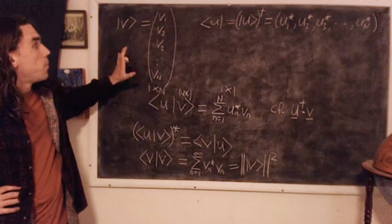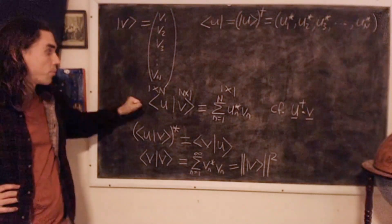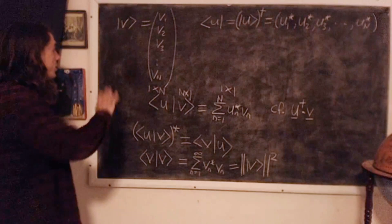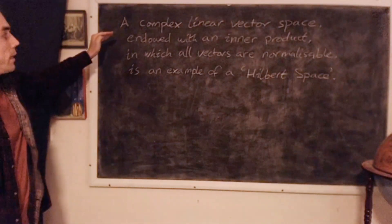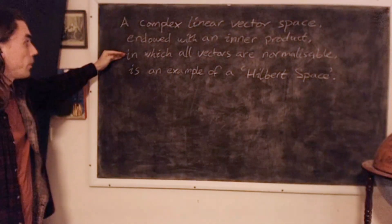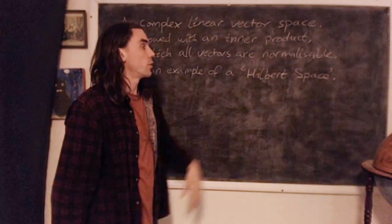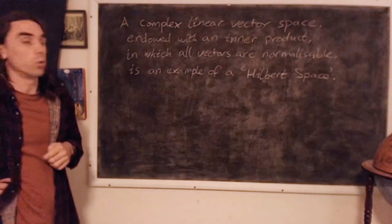so we have a complex vector space with an inner product on it, or a dot product. And actually, we have the following definition. A complex linear vector space endowed with an inner product in which all vectors are normalizable is an example of what's called a Hilbert space. So when we say that the vectors are normalizable, that just means that their norm squared are all finite.